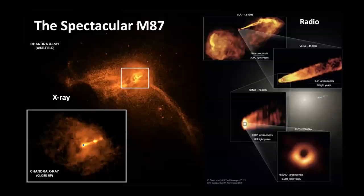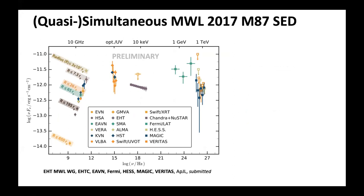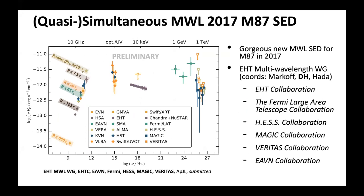Moving on to M87: you've seen a lot of this in Shep's talk on the very first day. M87 has stolen all of our hearts with this incredible image. The EHT multi-wavelength working group is excited that we're just about to share our first big results on the M87 campaign. This is a snapshot of all the campaigns working together — a huge shout out to all the collaborators. This is a preliminary SED, fully simultaneous within a few days for all observatories, looking at M87 all at the same time.